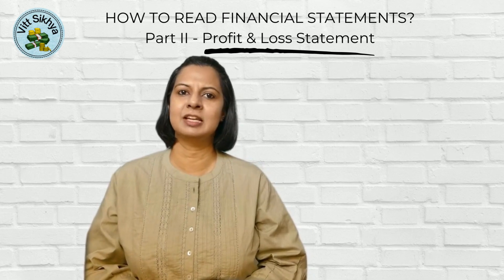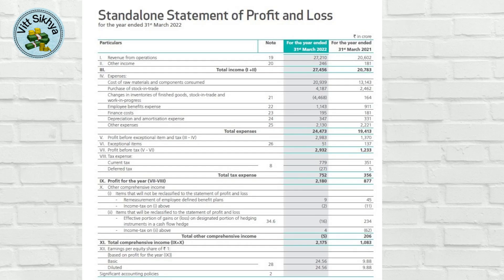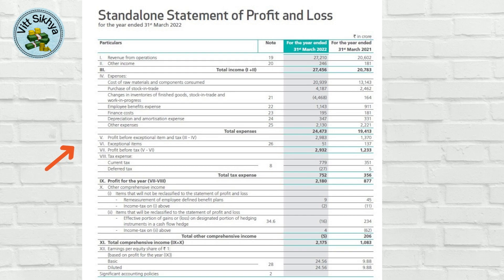Let's look at the P&L statement of Titan Limited for better clarity. The statement begins with revenue from operations and other income, followed by the expenses section. This includes the cost of raw materials, changes in inventory from work in progress to finished goods, which are the operating expenses, and employee benefits, financial costs, depreciation, and other non-operating expenses. The difference between the revenue and expenses gives us profit before exceptional items and tax. After deducting the exceptional items and tax expenses, we get the profit for the year, that is Rs. 2180 crores.